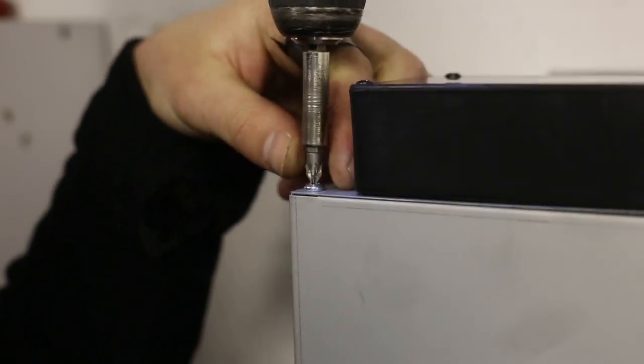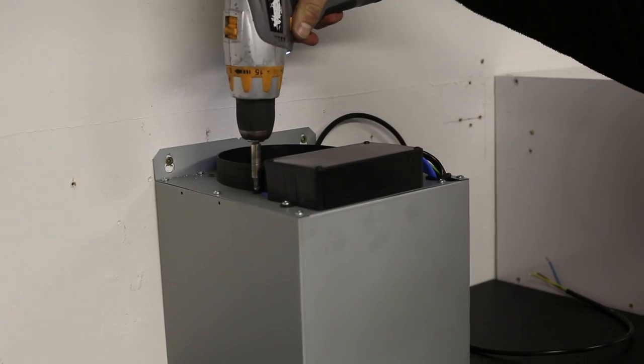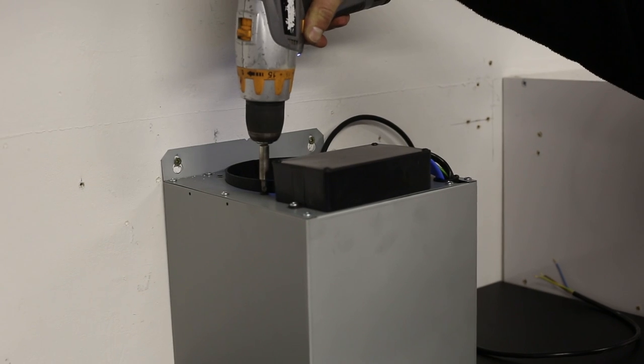Unscrew the four screws holding the motor to the frame of the hood. The motor should drop slightly into the hood. Unscrew the black plastic box containing the PCB and unscrew the transformer.